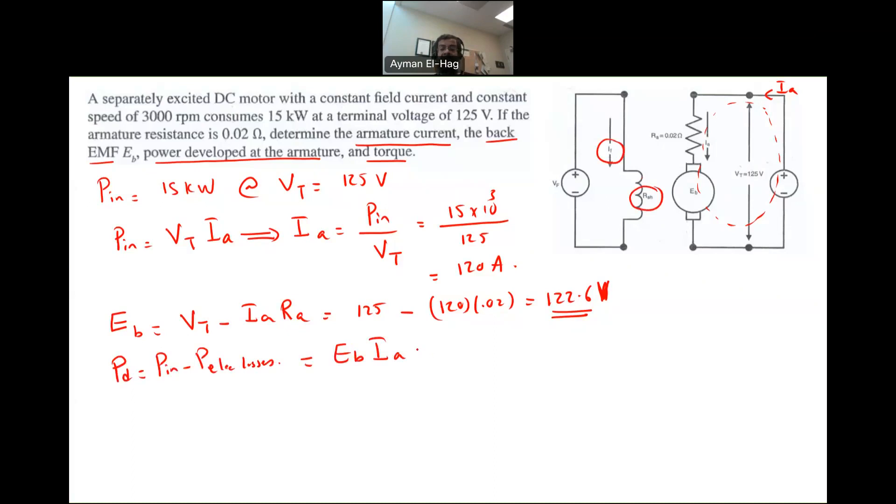And we have both values. So this EB is equal to basically 122.6 times the IA, and the IA you already found, which is 120. And this will give me a total power equal to 14.7 kilowatt.